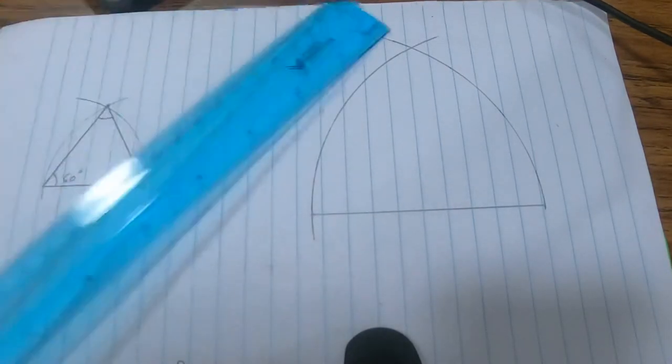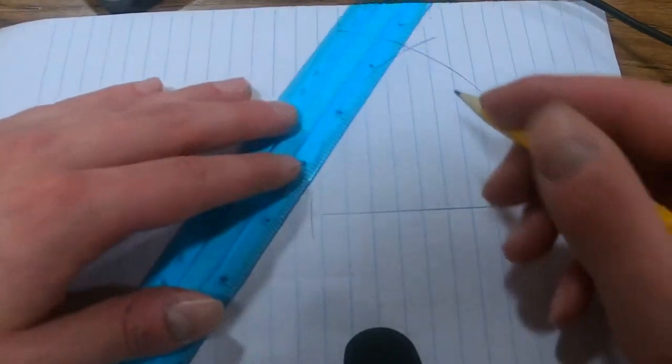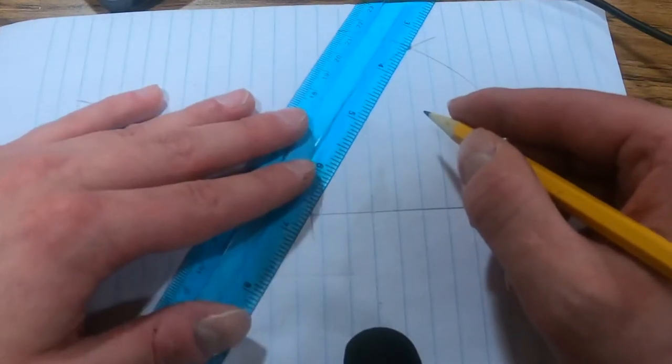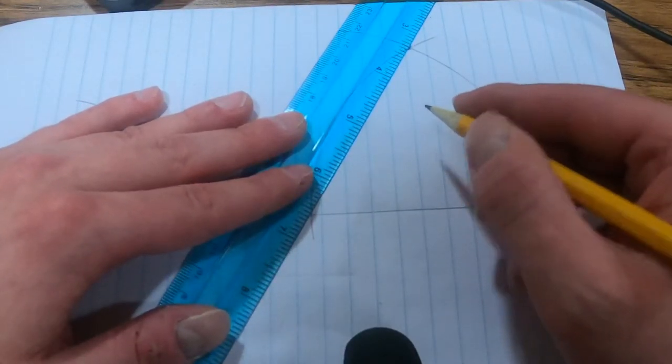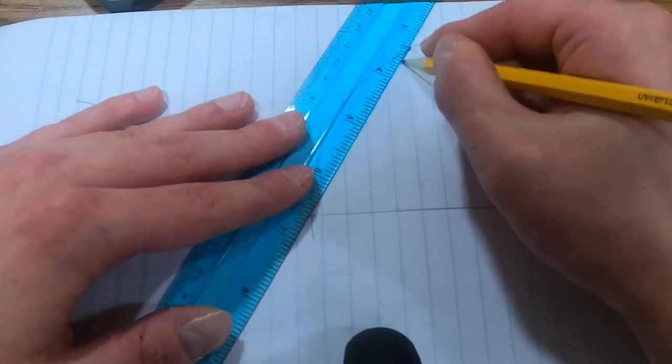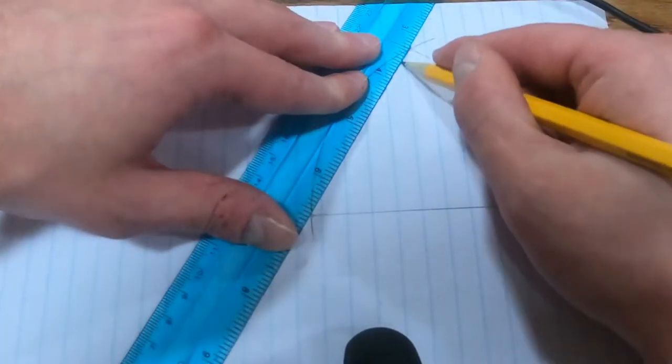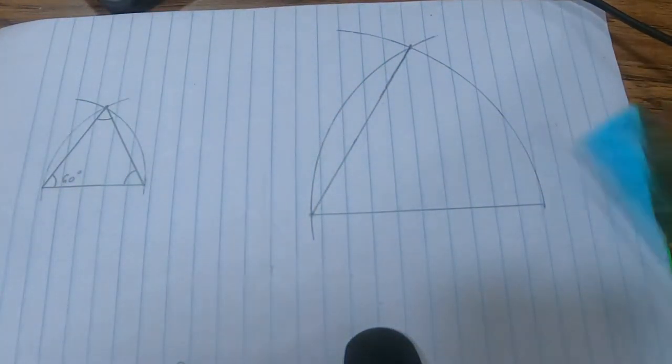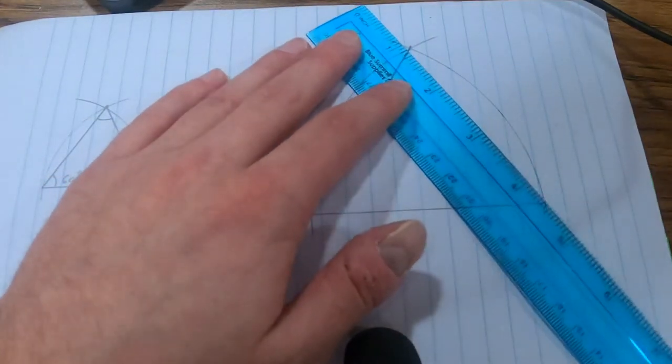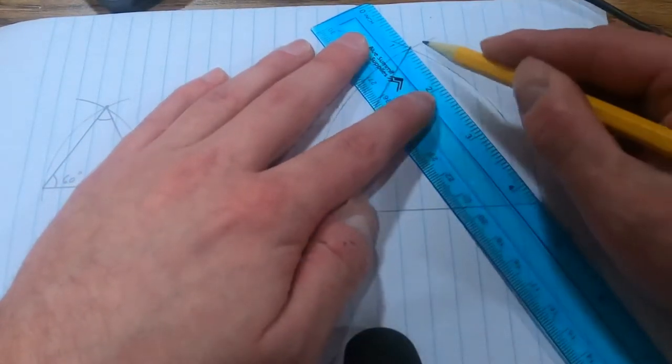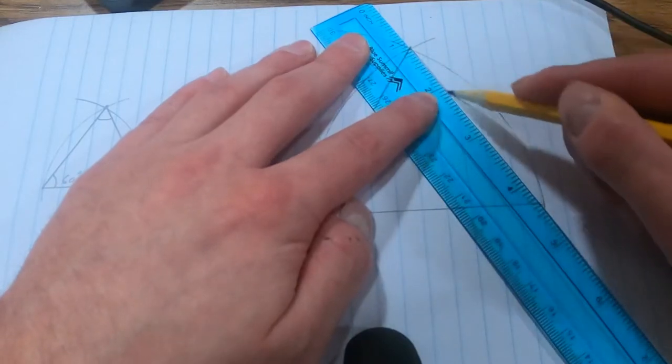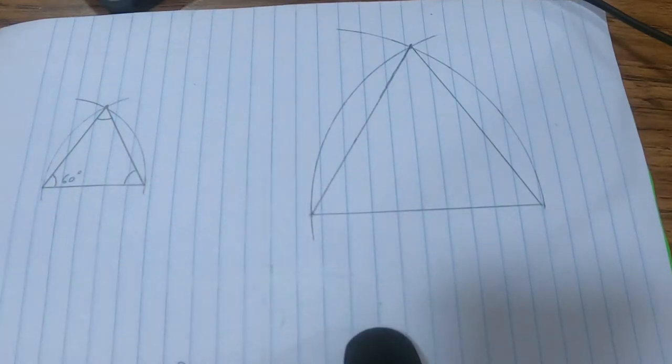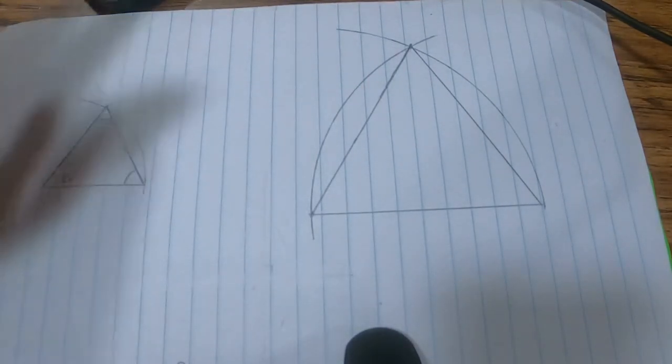So go ahead and finish by connecting your intersection points to your line segment lengths or endpoints. And I have what appears to be an equilateral triangle. Now that you've drawn it, you can take out your protractor and double check that these are all 60 degree angles.